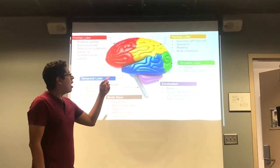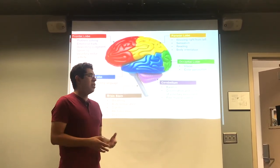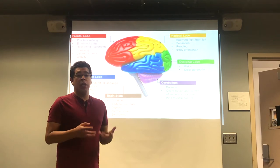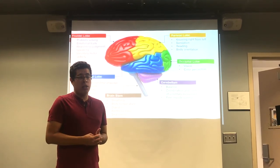Next we have the parietal lobe, which is responsible for knowing left from right, sensation, reading, and body orientation.